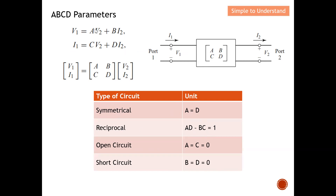For a reciprocal circuit, you can see that AD and BC satisfy AD minus BC equals one. For an open-circuit condition, A and C need to be equal to zero. Remember, in order to achieve open circuit, A and C become zero. As for a short-circuit condition, B and D need to become zero.